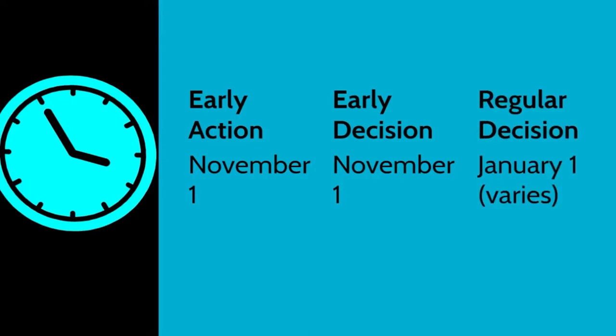The typical deadline for Early Action is November 1st, which is the same for Early Decision. The deadline for Regular Decision is January 1st. The deadlines for Regular Decision will vary the most, but expect these deadlines to be after December. Note that Early Action and Early Decision can have two phases, but November 1st is a general deadline for the first phase.